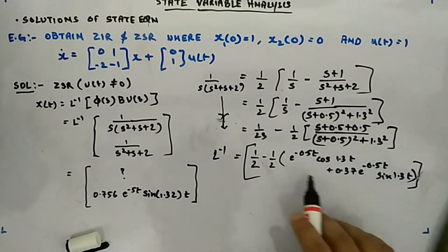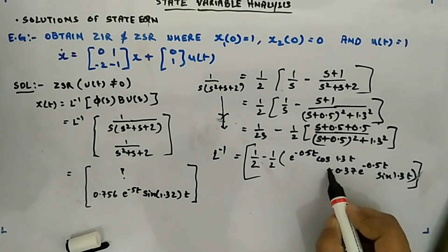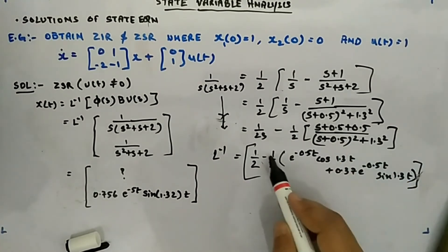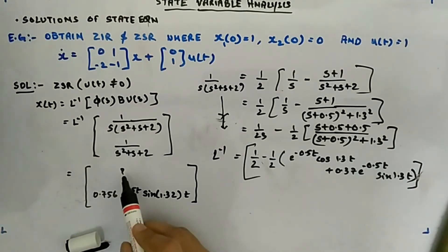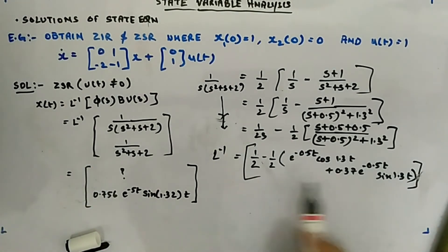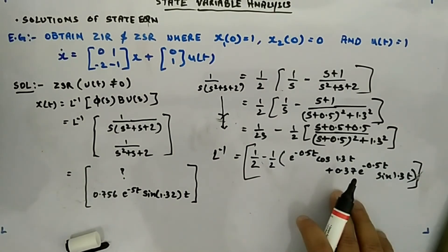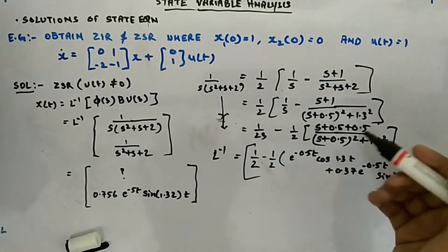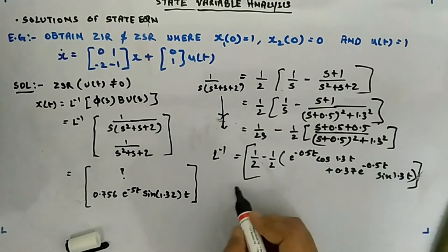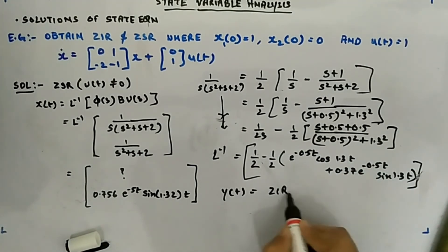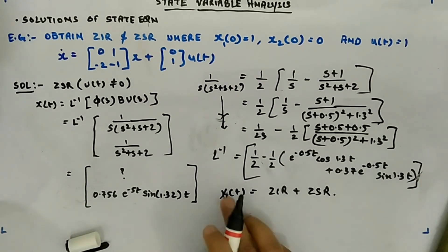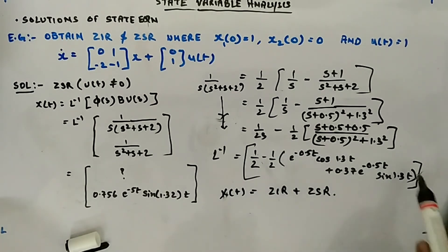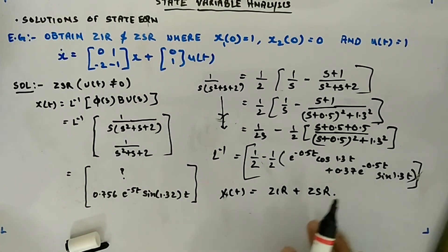This bracketed term is what we already calculated in ZIR, so I copied it from there. The (1/2) factor and the u(t) come outside. This is the first term of the Laplace inverse of x(t) — that is the correction. Thanks to one of the commenters — I think his name is Vikas — who pointed this out. You can now calculate x(t) as ZIR plus ZSR. I just wanted to correct this part so you would not get confused. Everything else is correct.